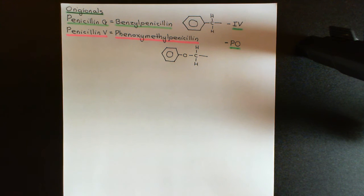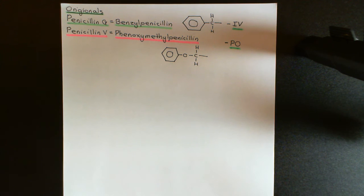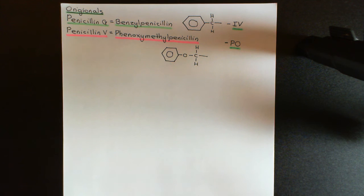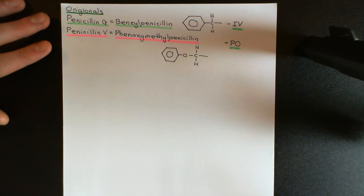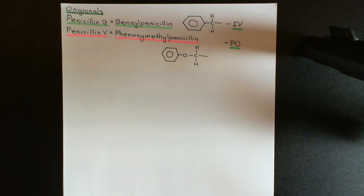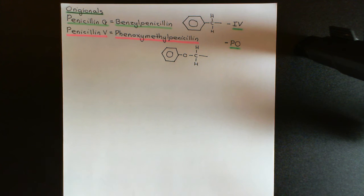Another limitation is that both drugs are very good against gram-positive bacterial species — those with a thick cell wall but no outer membrane — but they have limited efficacy against gram-negative bacteria, which have a smaller cell wall plus an additional outer membrane. Improving coverage against gram-negative bacteria was one of the motivations for developing later categories of penicillin.